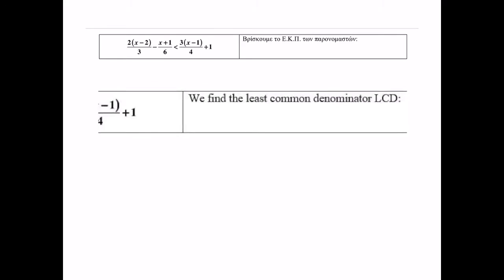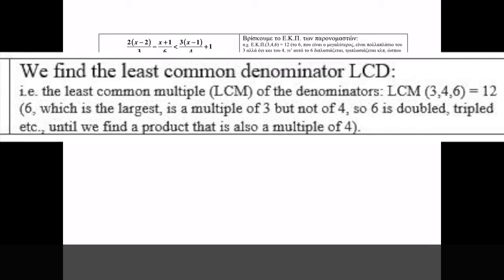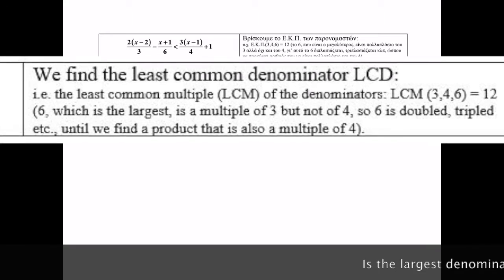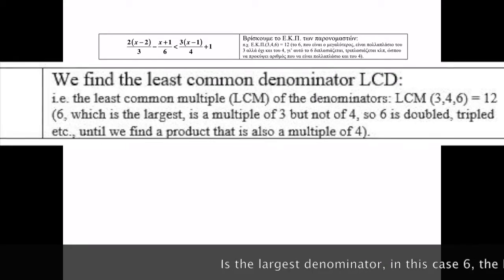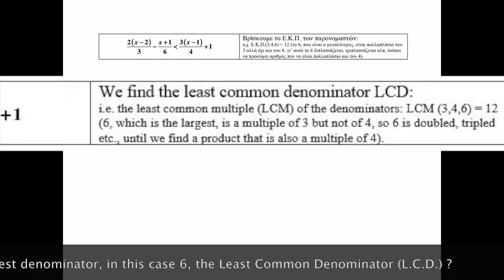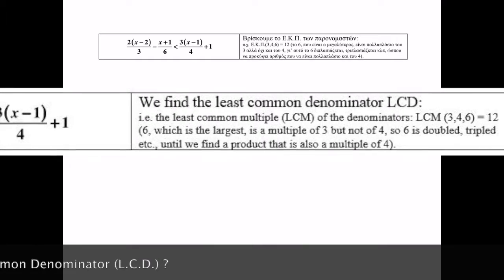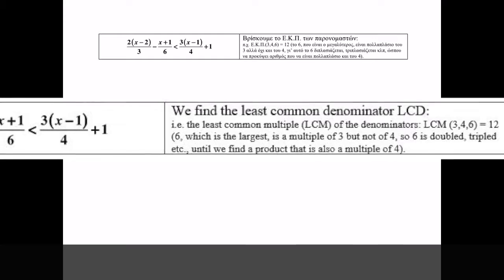First, we find the least common multiple of the denominators, also called least common denominator. We are checking the largest of the 3, 6 in this case, as an LCD candidate. As 6 equals 2 times 3, it's already a multiple of 3. But 6 equals 4 times 1.5, and 1.5 is not an integer, so 6 is not a multiple of 4.